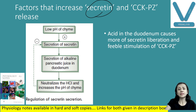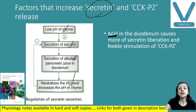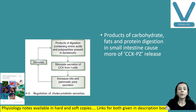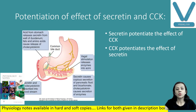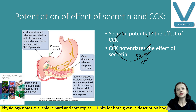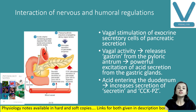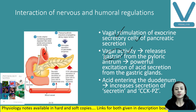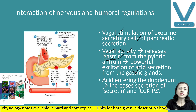Secretin secretion is increased by acid — low pH of chyme — and secretin increases alkaline juice to neutralize acidity. Cholecystokinin is secreted due to presence of products of carbohydrates, fats, and proteins in the small intestine. Secretin and cholecystokinin potentiate each other's effect — together, even small amounts produce significant bicarbonate secretion as well as enzyme-rich secretion. Neural regulation via the vagus acts on both exocrine and endocrine cells of the pancreas. Vagal activity also increases gastrin release from the pyloric antrum, which stimulates acid secretion, which in turn increases secretin secretion as acid enters the duodenum.